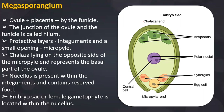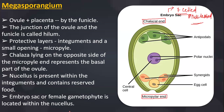The opening not covered by integument is called the micropylar end, and the region opposite to the micropylar region is called the chalazal end. In a typical matured embryo sac, it exists in a 7-celled, 8-nucleated condition.